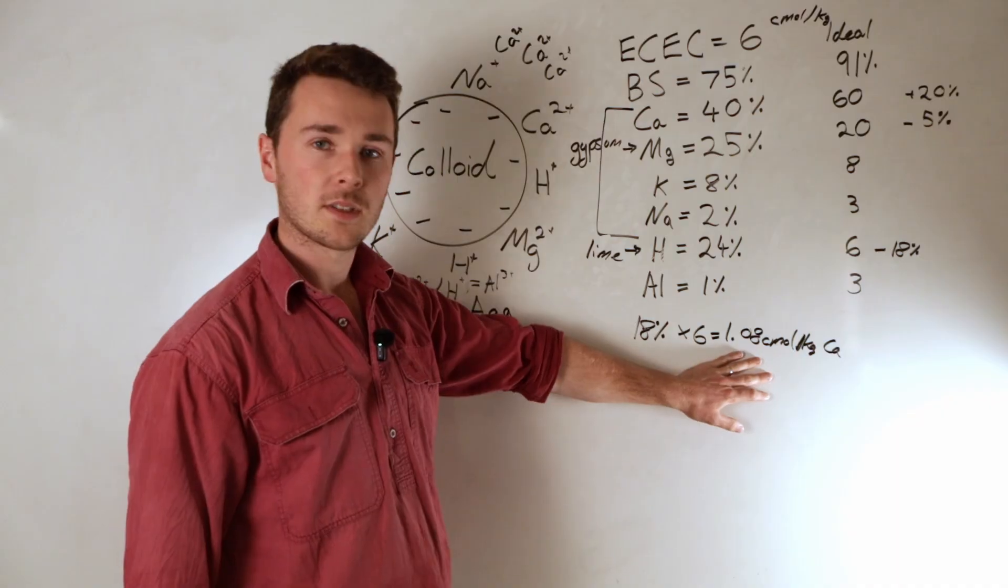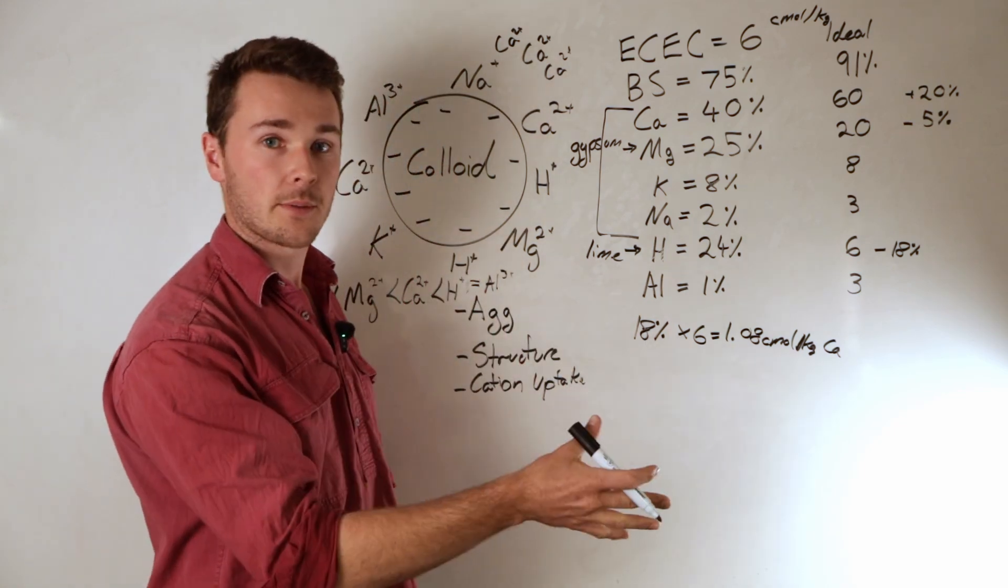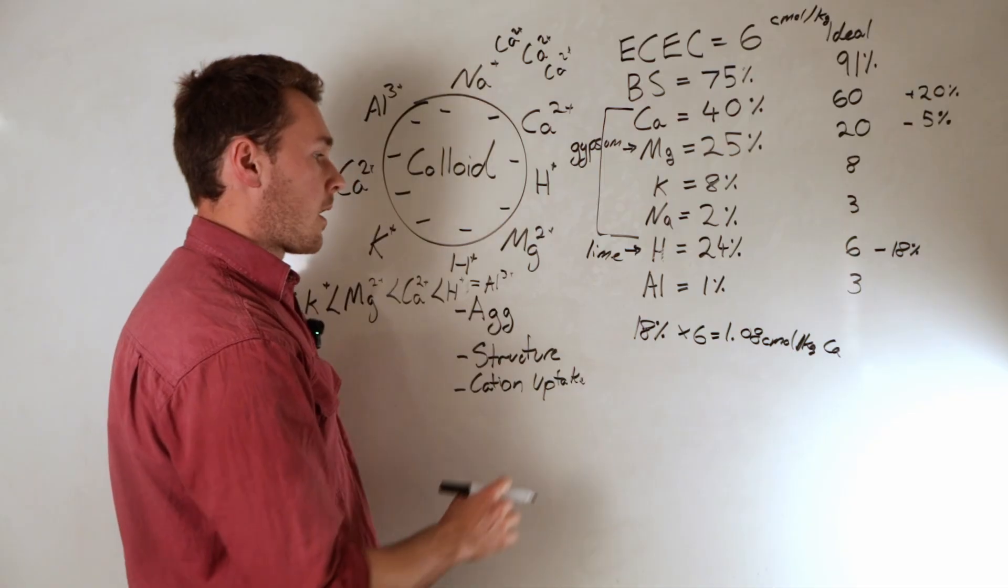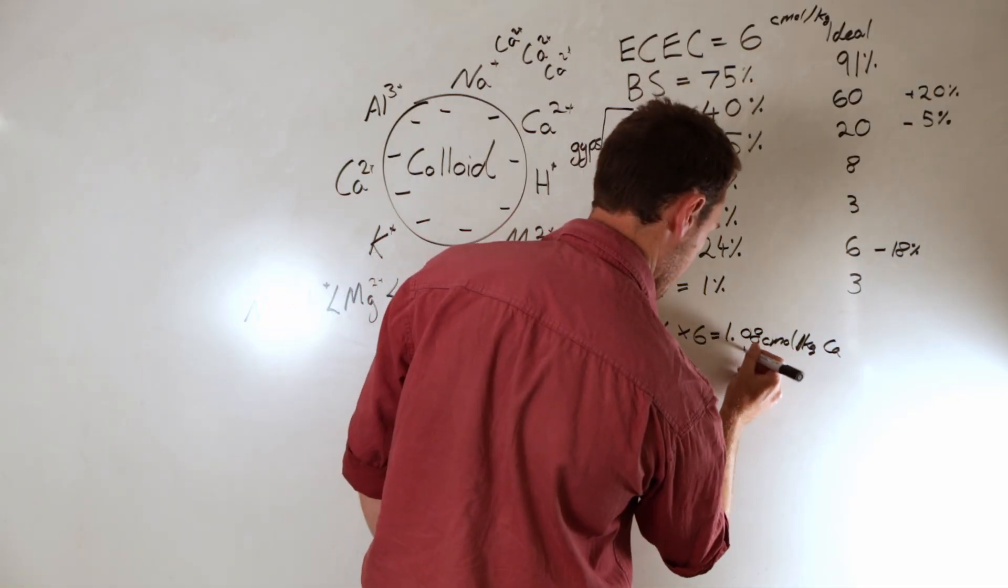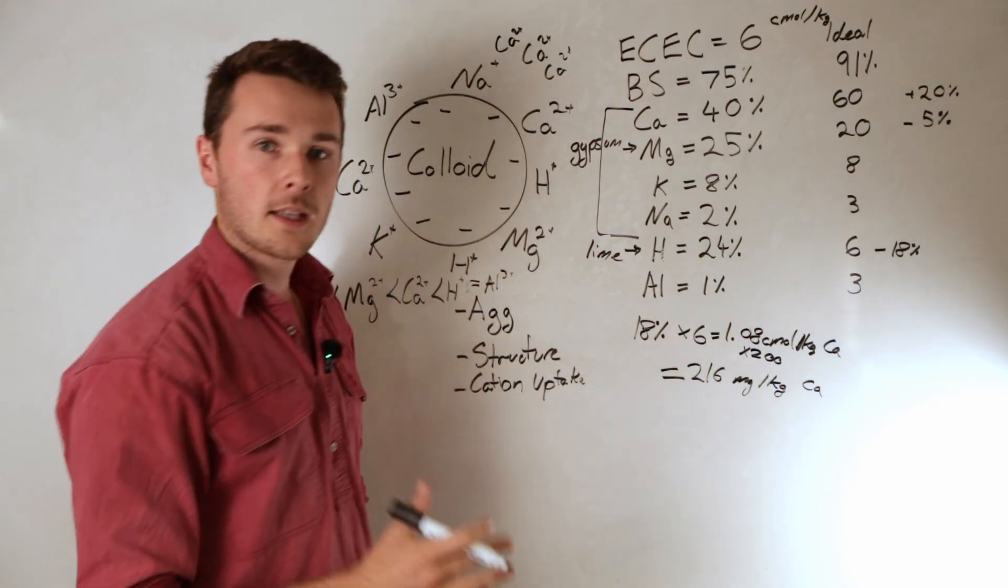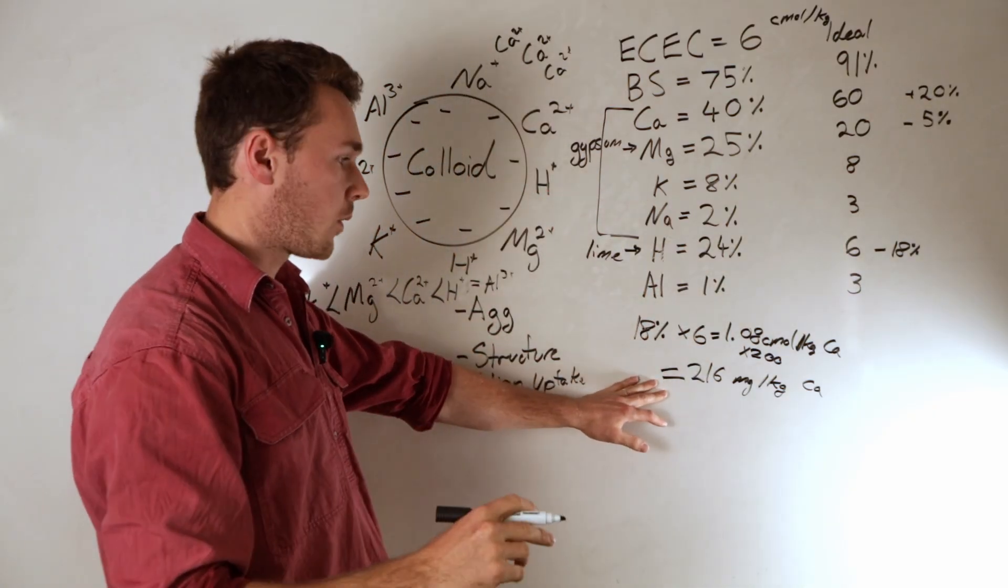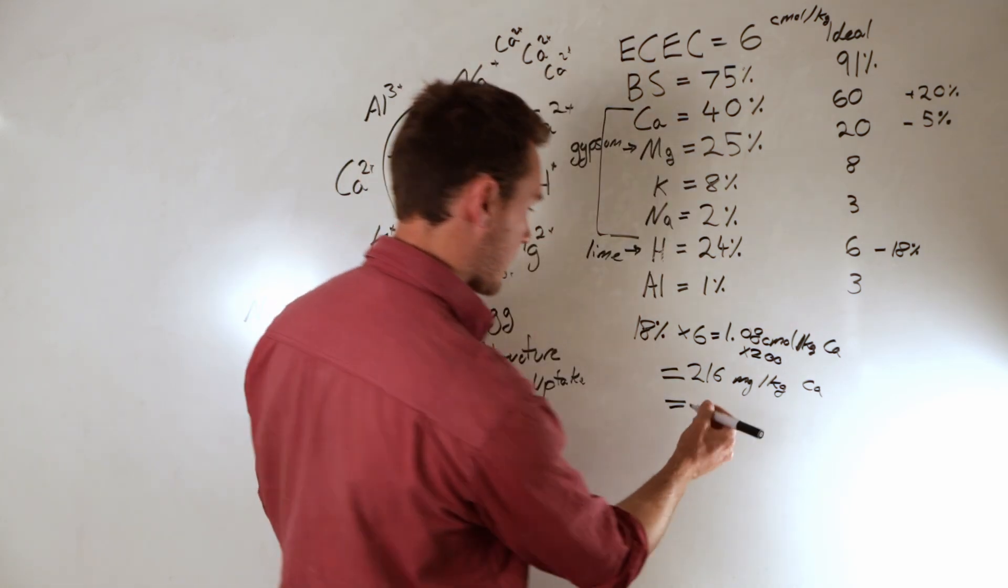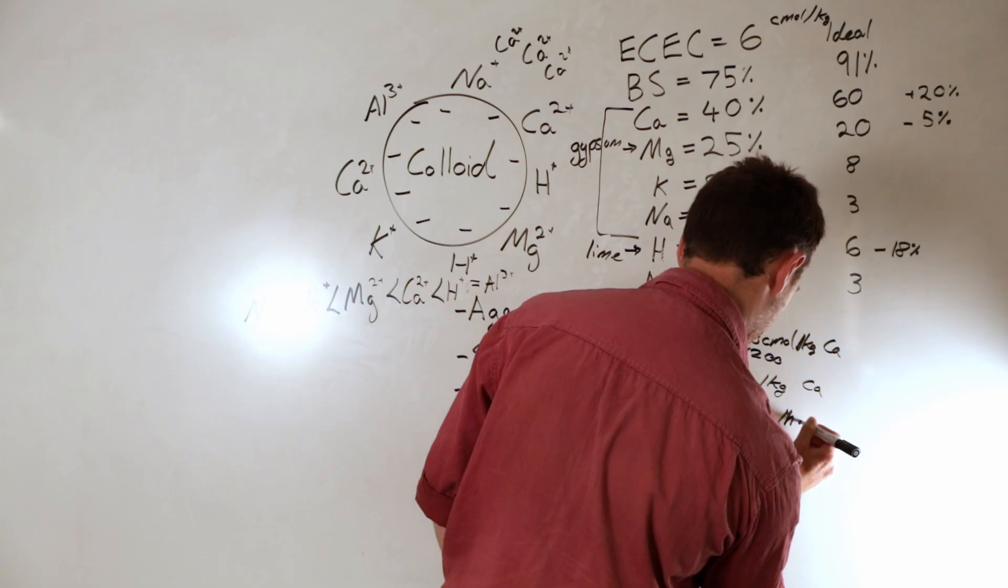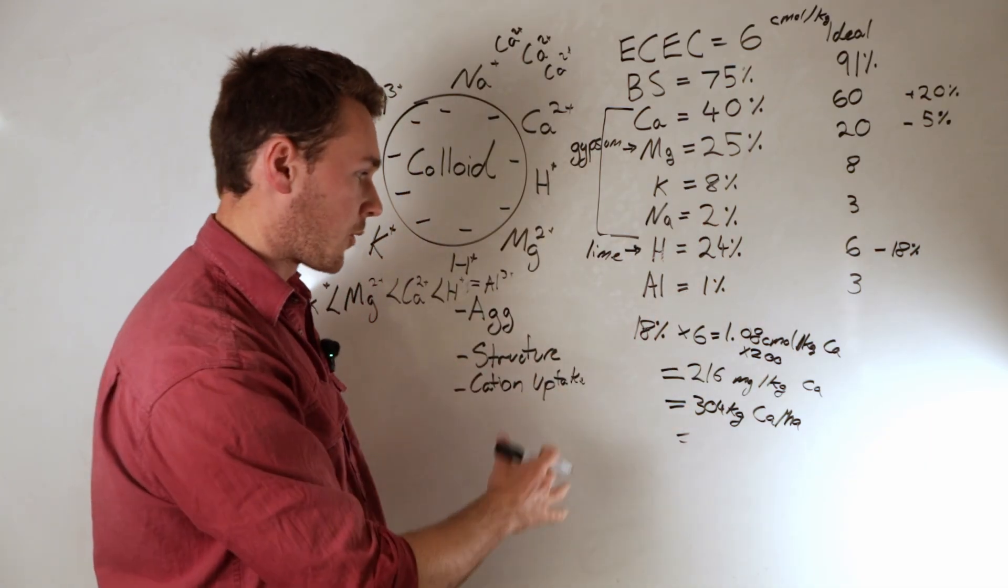So 18% of our CEC, so times that by 6, that's going to equal 1.08 centimoles per kilo of calcium to add. So that tells us how much calcium to add to displace this hydrogen. What we want to do now is convert centimoles into milligrams. And so in order to convert any of these into milligrams per kilogram from centimoles per kilogram, you can find a table here or just the conversion rates. For calcium, it's 200 milligrams per centimole. And so we have that many centimoles, we're going to times this by 200. That's going to equal 216 of milligrams of calcium per kilogram.